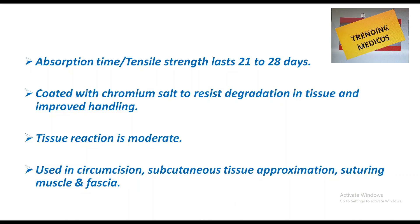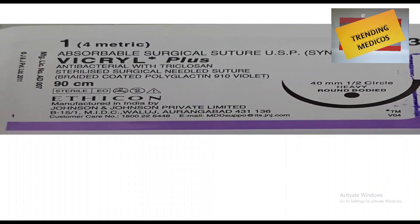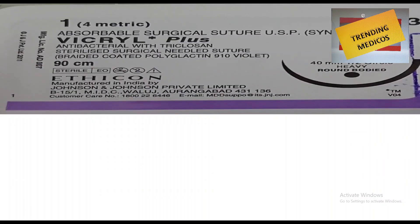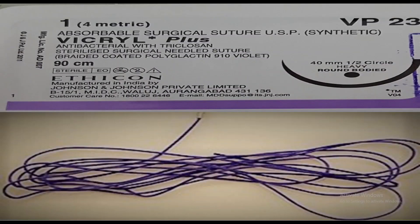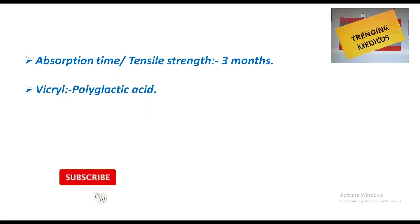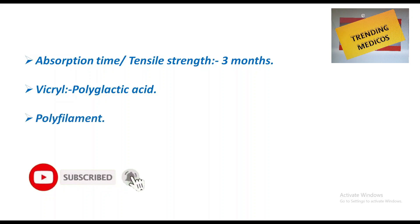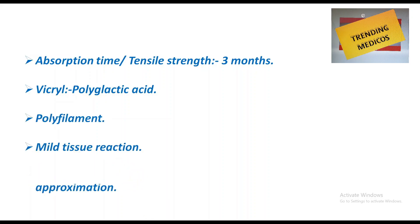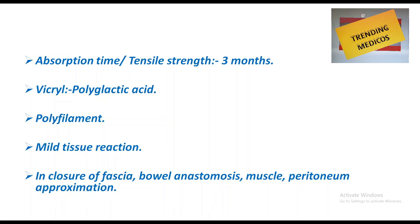Chromic catgut is brown in color. Its tensile strength lasts 21 to 28 days. It is coated with chromium salt to delay degradation in tissue and improve handling. Tissue reaction is moderate, and it is used in circumcision, subcutaneous tissue approximation, and suturing muscle and fascia.